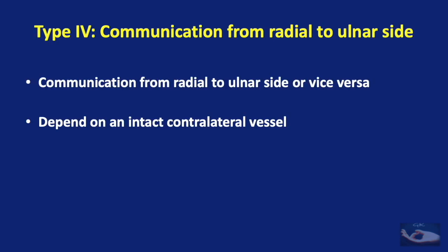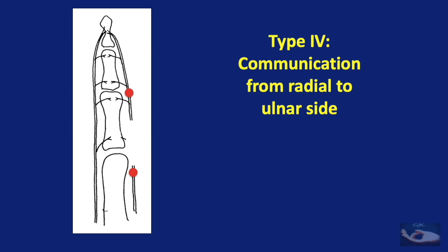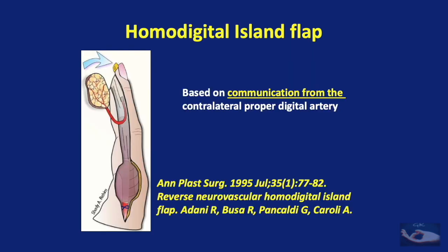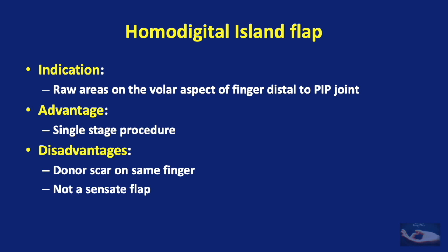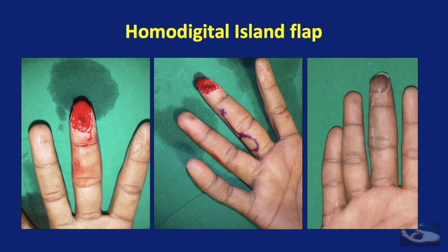The next classification type is based on communication from the radial to the ulnar side of the finger or vice versa. Just like volar-to-dorsal communications, there are also radial-to-ulnar communications at the level of the neck and base of the middle phalanx, and the neck and base of the proximal phalanx. An example of this type is the homodigital island flap, based on the proper digital artery on the opposite side, used for coverage of raw areas on the volar aspect of the finger distal to the PIP joint — as shown in this example covering a defect on the right hand middle finger terminal phalangeal region.